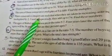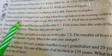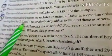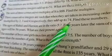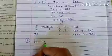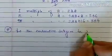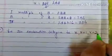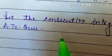Three consecutive integers. So let the numbers be x, x plus 1, and x plus 2. There will be a difference of 1 between them. Now according to the question, when they are multiplied by 2, 3, and 4...